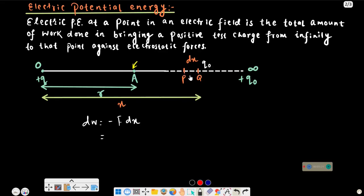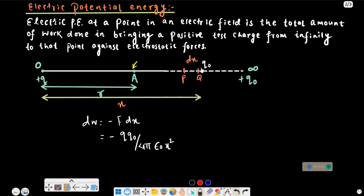The force on the test charge q₀ at distance x from charge Q is given by Q·q₀ by 4πε₀x². As the test charge comes from infinity to a finite distance, we need to integrate to find the total work done.